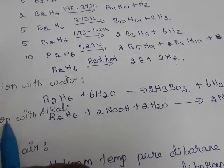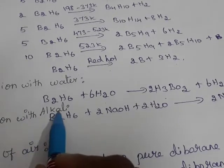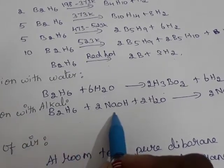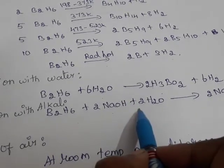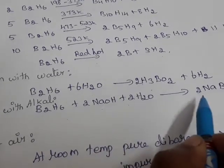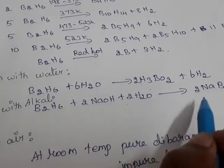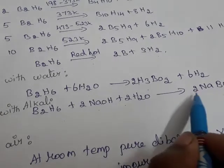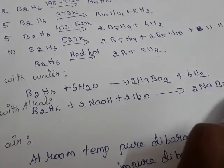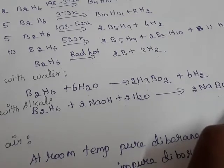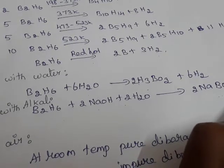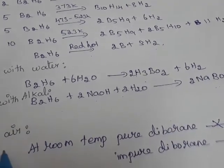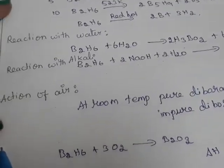Next, the reaction with alkali: Diborane reacts with sodium hydroxide plus water to form sodium metaborate, and hydrogen is liberated. Next, we are going to see the reaction with air.